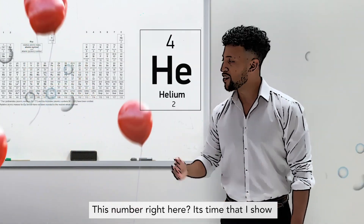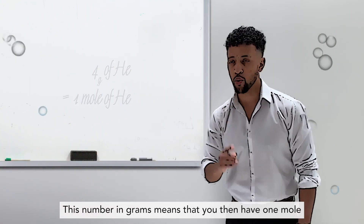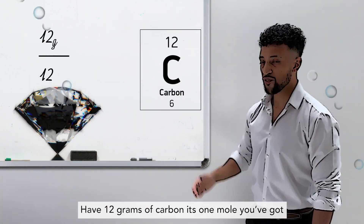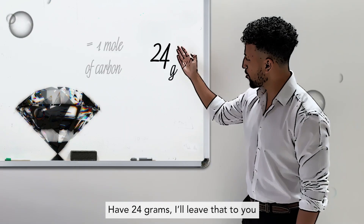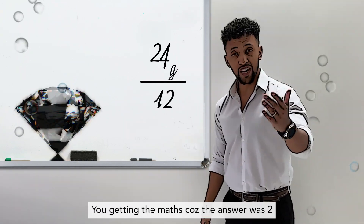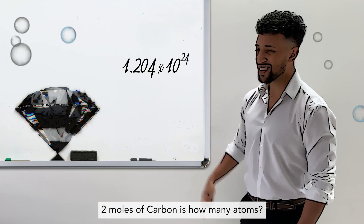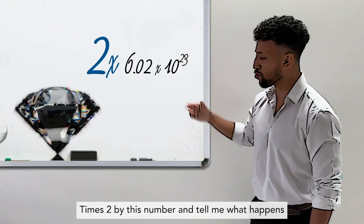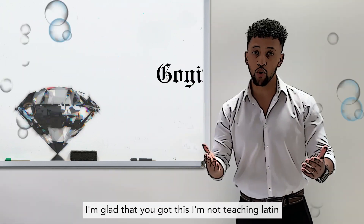This number in grams means that you have one mole. Just look at carbon — it's twelve on the spot. Have twelve grams of carbon, it's one mole you got. Have twenty-four grams — I'll leave that to you. You getting the maths? Cause the answer was two. Two moles of carbon — how many atoms? Times two by this number and tell me what happens.